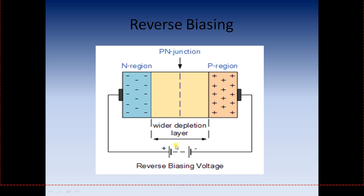In terms of the electric field, the external battery provides an electric field which aids the electric field inside the depletion region, both in the same direction. Hence, no electron from the N region can pass to the P region to complete the circuit. This is reverse biasing — if the positive terminal is connected to the N region and the negative terminal to the P region, the diode acts as an open circuit with no current flowing.